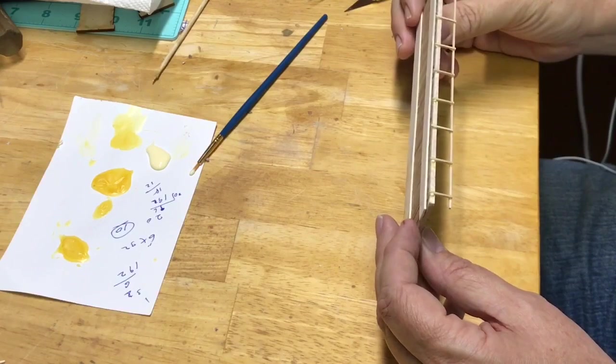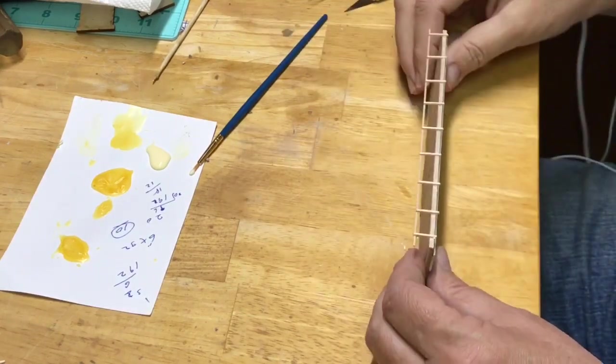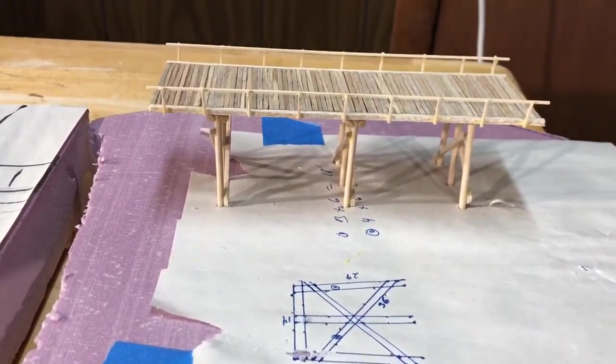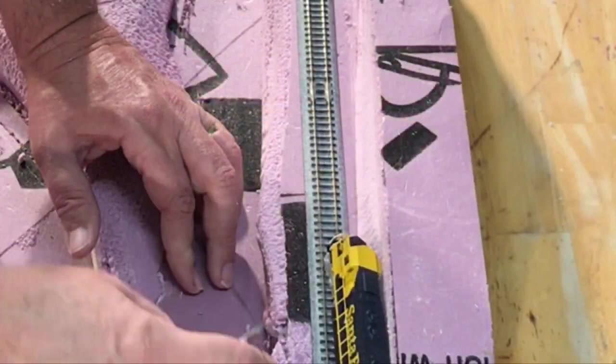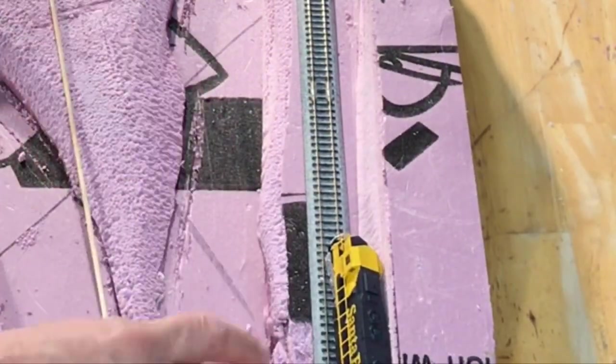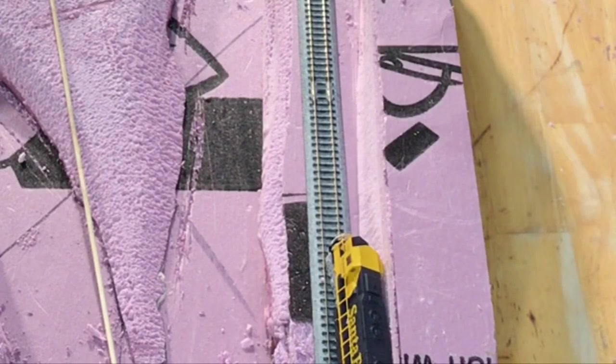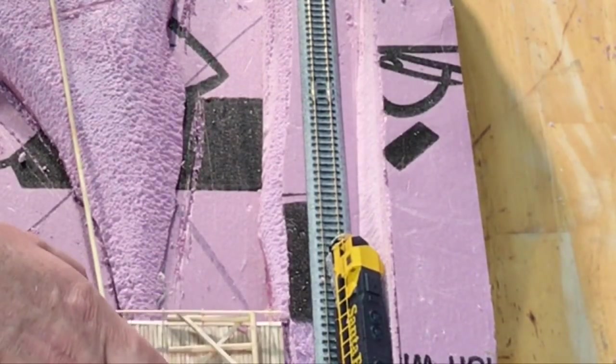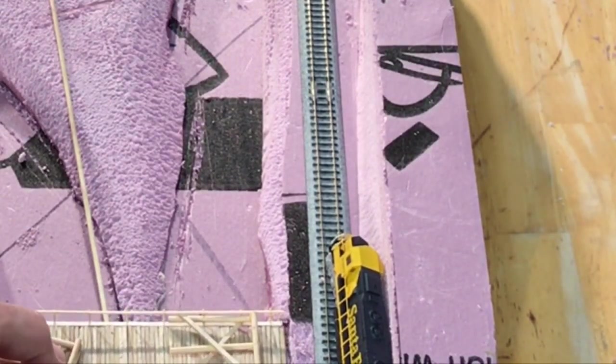Now it's time to attach the piers to the decking, and in order to do this I've got to know exactly where to place them. So I need to fit it into the foam and figure out where the river and road are going to be underneath it.